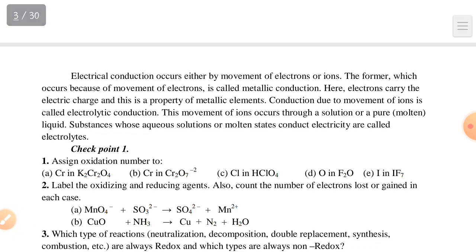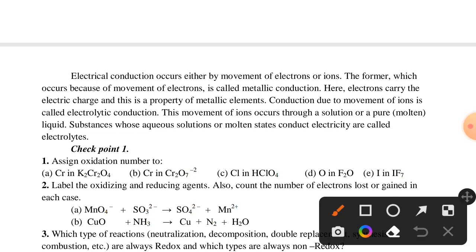Electrical conduction occurs either by the movement of electrons or ions. The former, which occurs because of movement of electrons, is called metallic conduction — electrons carry the electric charge, and this is the property of metallic elements. Conduction due to movement of ions is called electrolytic conduction.